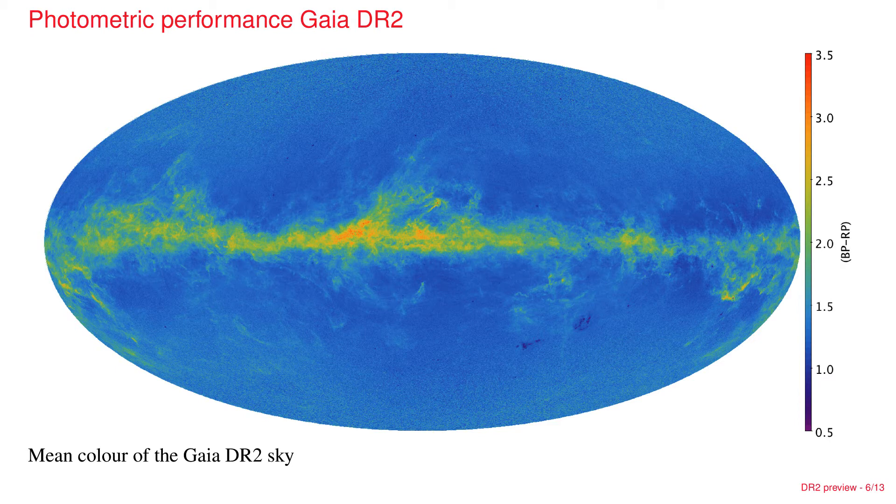At higher latitudes, the colors are bluer because we have less extinction and one is looking out into the halo of the galaxy. This gives in one shot this nice overview of the fact that we now have colors and homogeneous colors all over the sky.